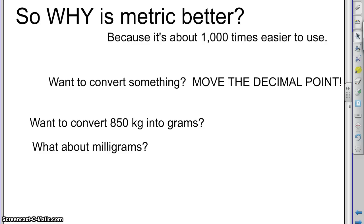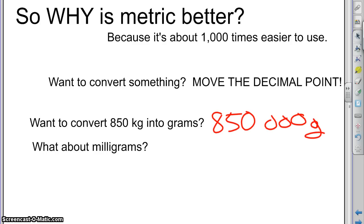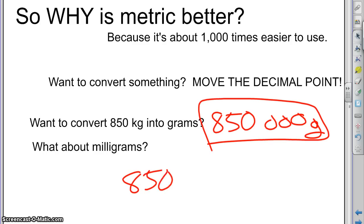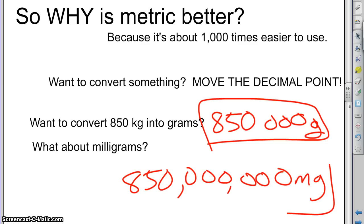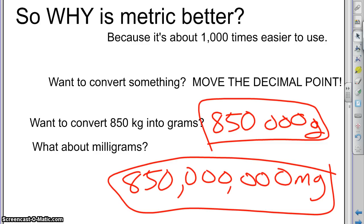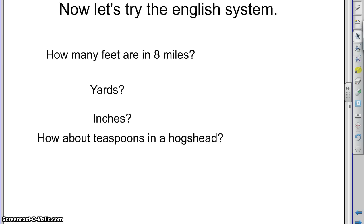So why is metric better? It's about a thousand times easier to use. You want to convert something, you just move the decimal point. Say I've got 850 kilograms and I want to know how many grams that is — I write 850 and move the decimal point three places, and I'm done. What about milligrams? Move it three more places. That's how you convert from one thing to another in metric.